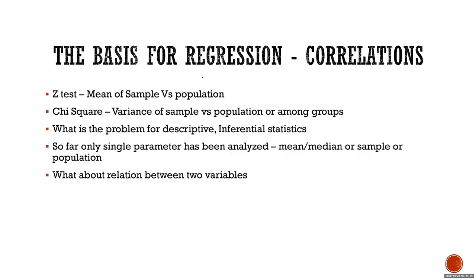So what are the basis for regression? We start with a topic called correlation. Let me introduce correlation. If you look at what we have studied so far, Z test, we were comparing only single variable sample and population. Then we did chi-square test, where you check variance of the sample versus population or variance of sample in different groups.